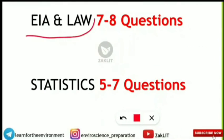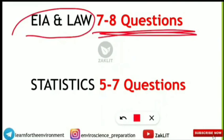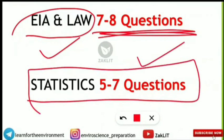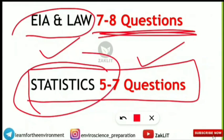Two major units: EIA (Environmental Impact Assessment) and environmental laws carry seven to eight questions combined — you should know all the basics and solve 100 to 200 previous year questions from this area. Statistics and biostatistics also carry five to seven questions every time in the paper — a very important unit.